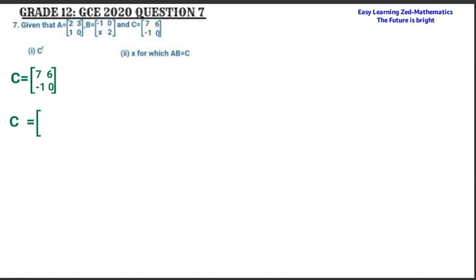The transpose is written as C with a superscript T on top. Once I've done that, the next thing is to interchange the rows and the columns — the rows will become the columns and the columns will become the rows.